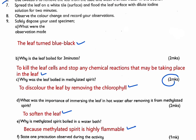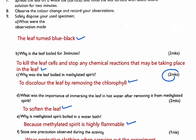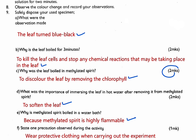Part F asks: state one precaution observed during the activity. We have many precautions because we are dealing with fire, boiling water, and hot liquids. The precaution is to wear protective clothing when carrying out the experiment. Always ensure that you wear protective clothing. We get one mark.